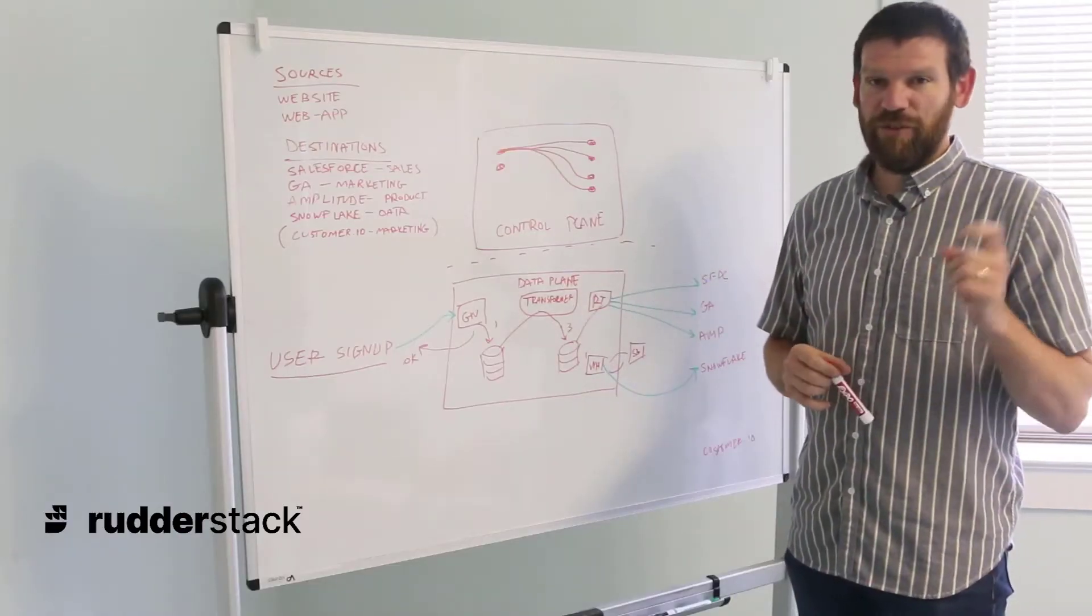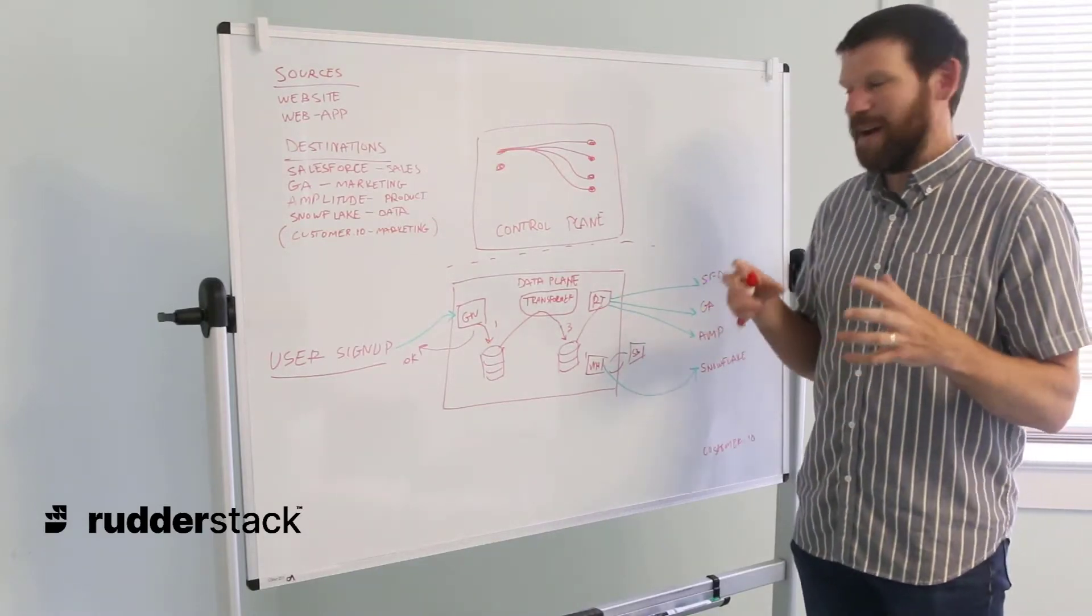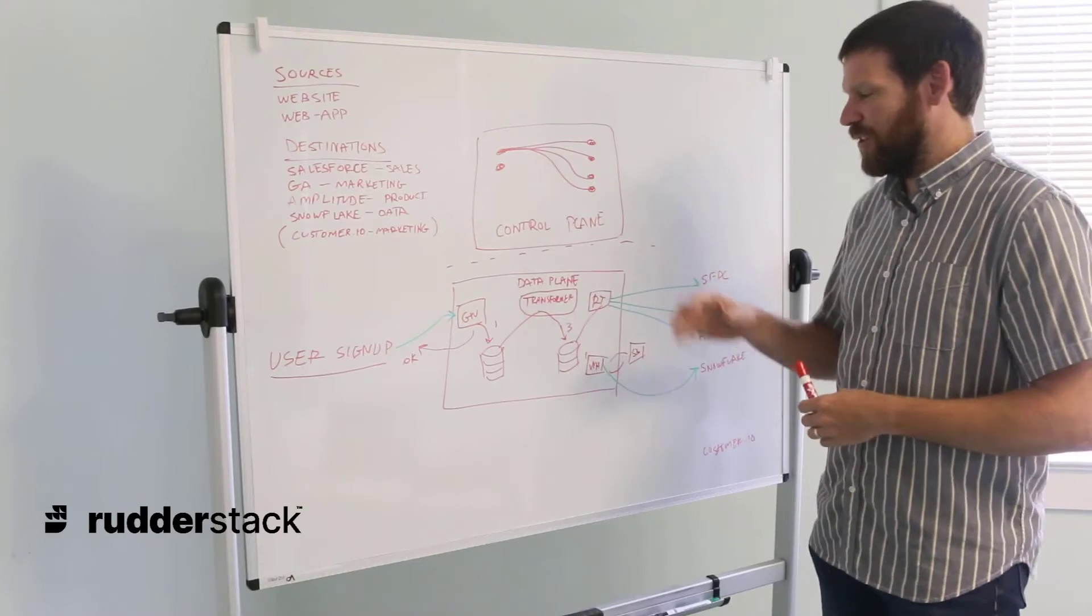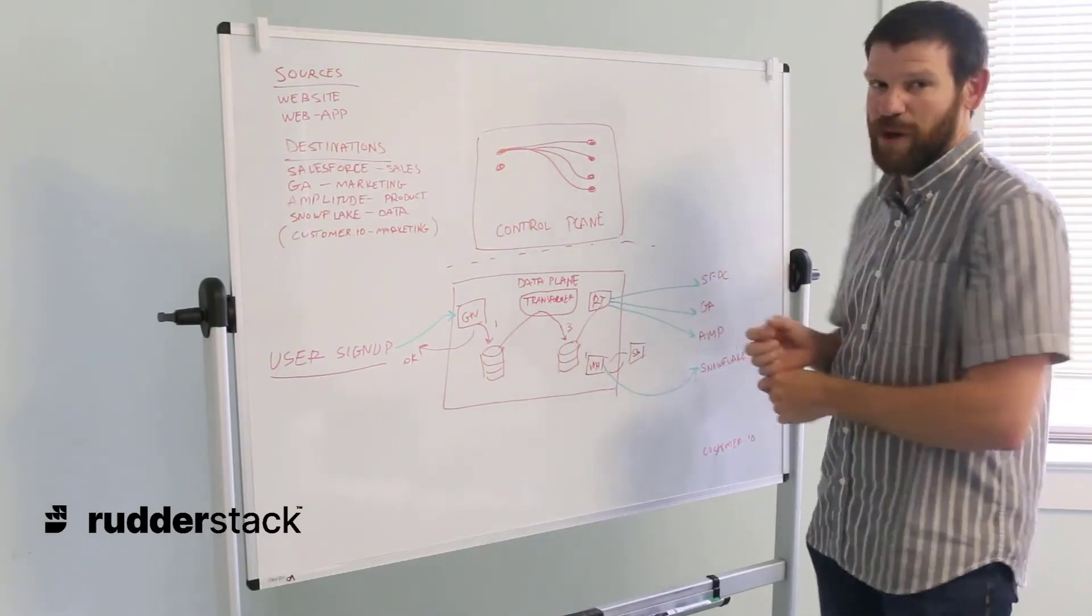There are two types of transformers: user transformers, which are custom transformers built by our customers to modify their data as needed, and the default transformer, which is what RudderStack manages to get that data into its proper downstream format.